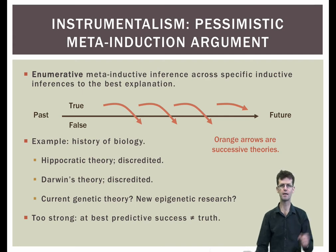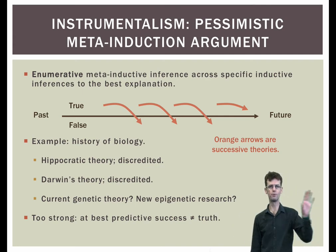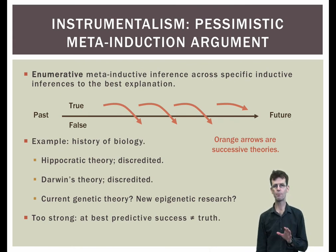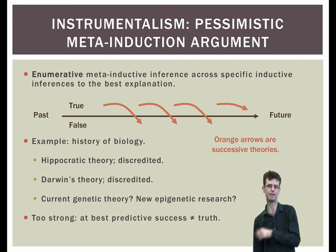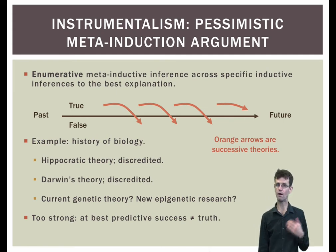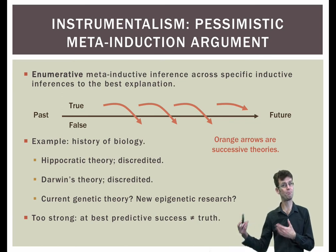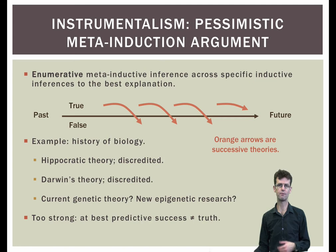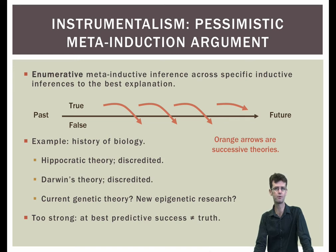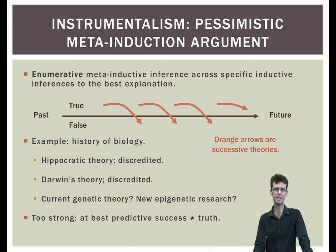Suppose a timeline stretching from past to future: above the line is the realm of the true and below is the realm of the false. We represent a succession of theories with lines with arrowheads, and after initially being true, all past theories have turned out to be false, dipping below the line. Inheritance theories provide a good example. The 5th century Hippocratic theory successfully predicts contribution of traits to offspring via mixing of seminal fluids from both parents, but is now discredited. Darwin's 19th century Pangenesis theory successfully predicts traits skipping a generation, but is now discredited. Our current genetic theories say all traits inherited by offspring are already present in parental genetic material, but some current epigenetic research is challenging this idea.